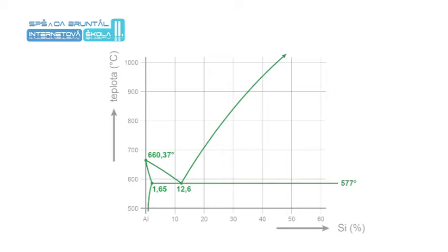Aluminum forms a large number of technically important alloys with many metals. Alloying elements generally have limited solubility in aluminum and create so-called substitutional solid solutions. The most common alloying elements are silicon, copper, nickel, and manganese.